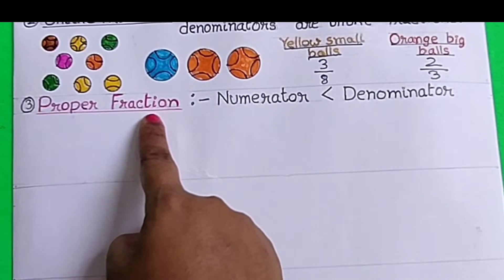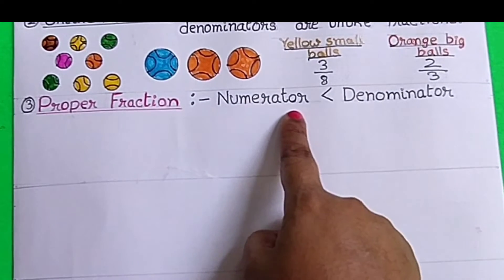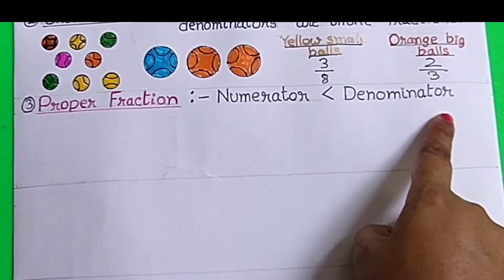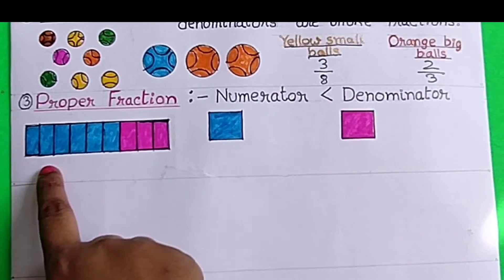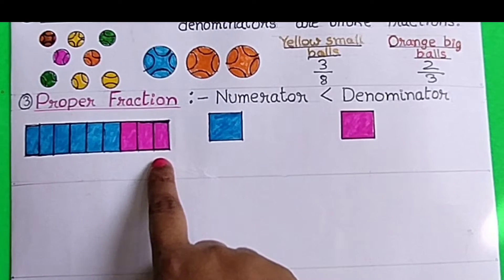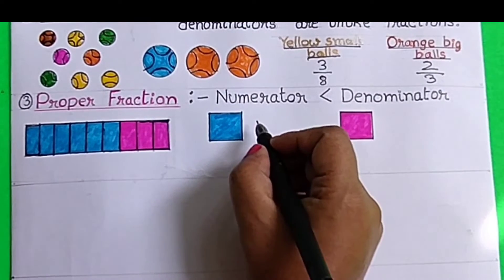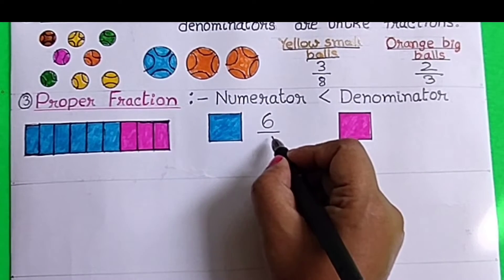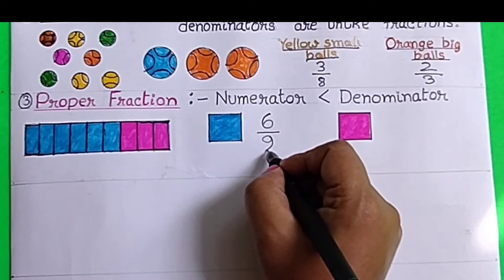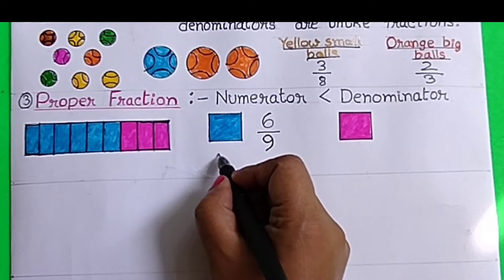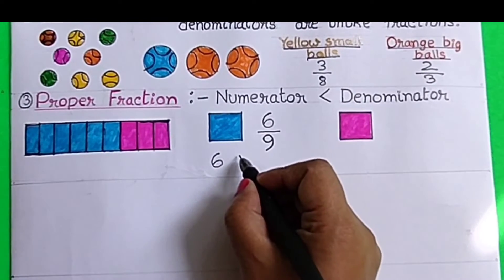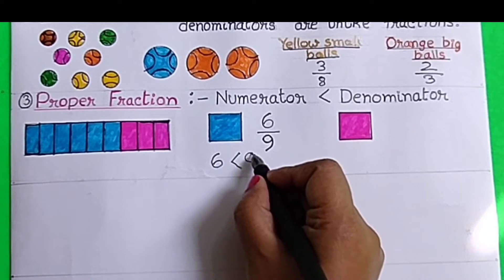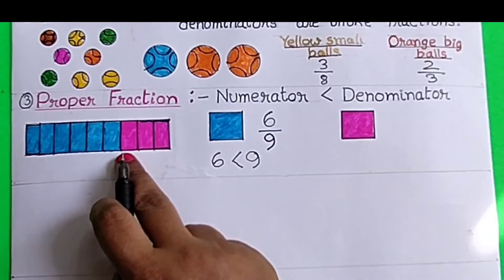Proper Fraction: When the numerator of a fraction is lesser than the denominator, that kind of fractions are called proper fractions. For example, there are 9 equal parts, out of which 6 parts are blue. So, using fraction, we can represent the blue part as 6 over 9. Here, the numerator 6 is less than the denominator 9. That means it is a proper fraction.